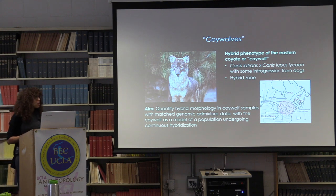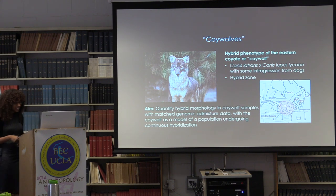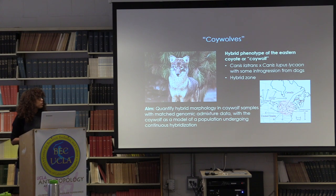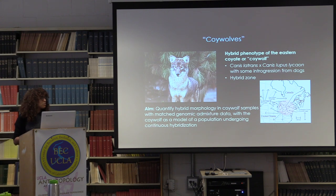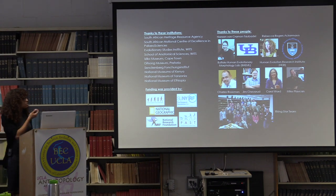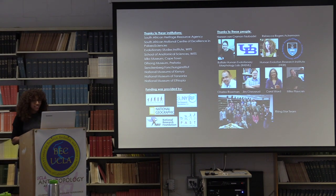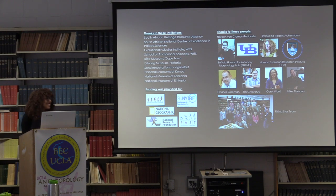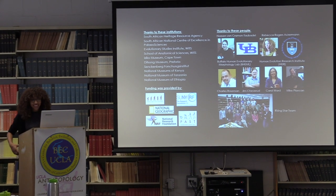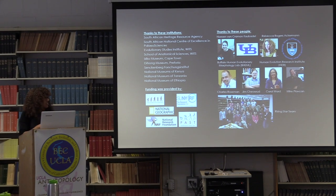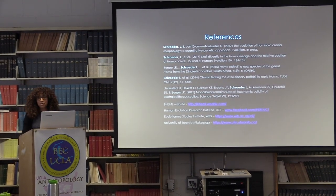The main aim of this project is to quantify the morphological signature of hybridization in samples of coywolf skulls with matched genomic admixture data, using the coywolf as a model of a population undergoing continuous hybridization occurring simultaneously between three or more taxa — building upon the ongoing body of research into the effects of hybridization in the mammalian skeleton. From early Homo to coywolves! I'm excited to be starting this project and hope to be collecting data next summer. Thanks to all these people and these institutions and funding. Thank you all for coming and I welcome questions.